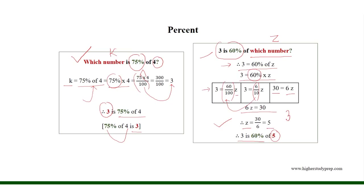So, 3 over 5 equals 60%, where 5 is the whole and 3 is the part. And 60% denotes that 3 parts out of 5 parts.